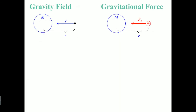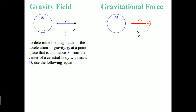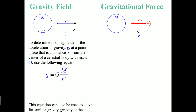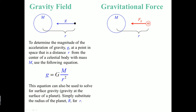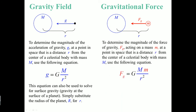Let's look at the difference between the gravitational field and the gravitational force. The gravitational field is little g — this equation can be solved for the surface gravity by simply putting in the radius R. The gravitational force describes the interaction between two masses, which are basically planetary objects.